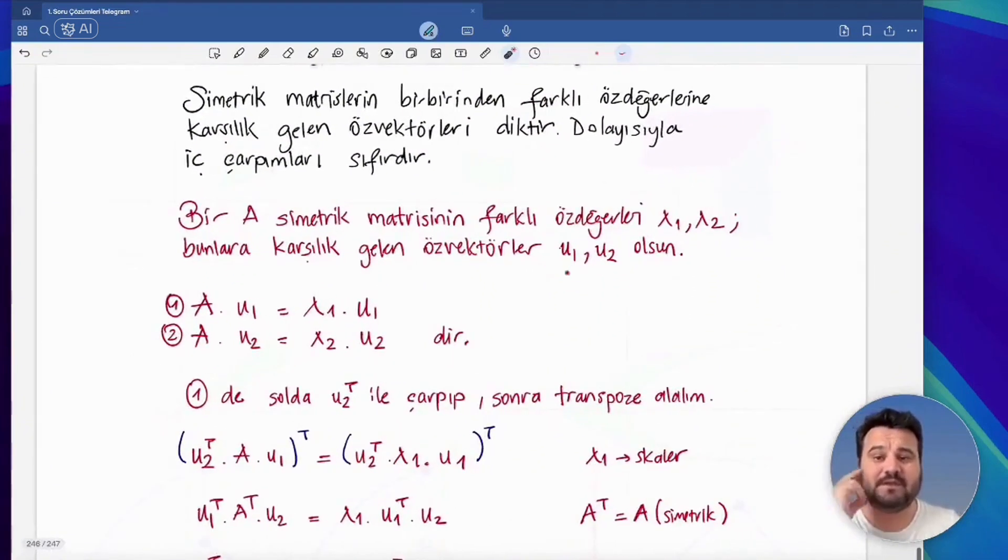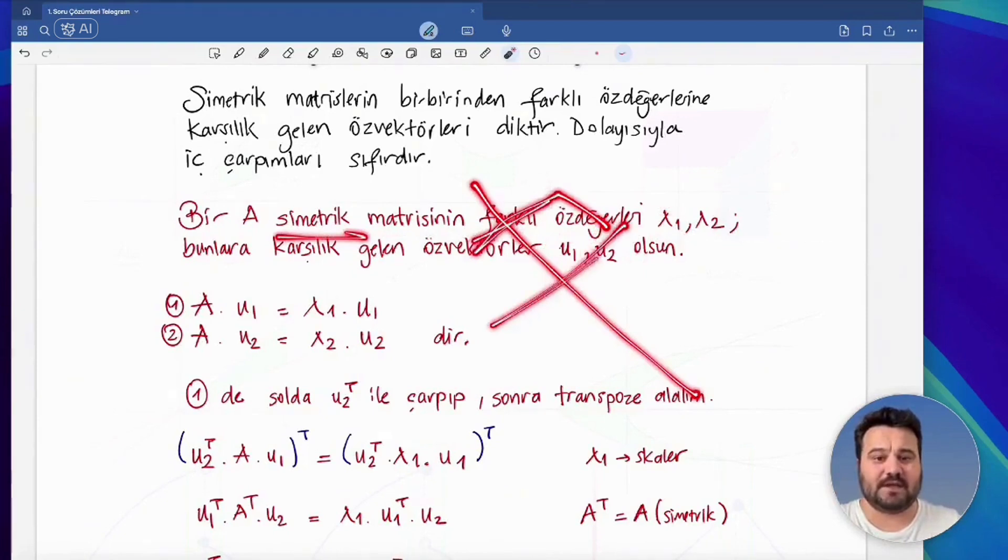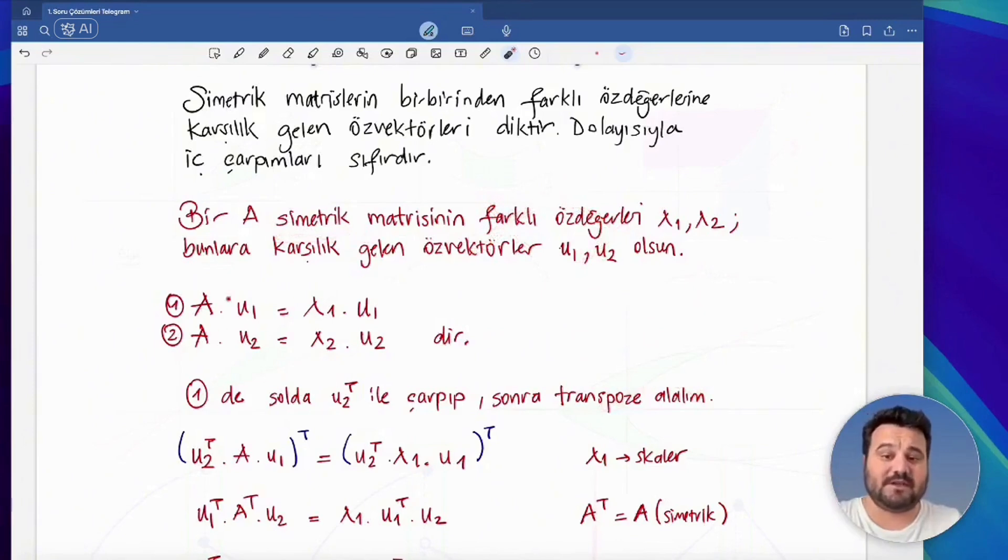Now, what is our proof? Let our matrix be symmetric and let the different eigenvalues be lambda 1 and lambda 2. Let the corresponding eigenvectors be u1 and u2. By the way, what was a symmetric matrix? What were these according to the diagonal? When it is symmetric, we called it a symmetric matrix.